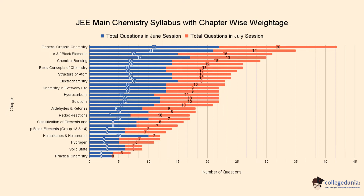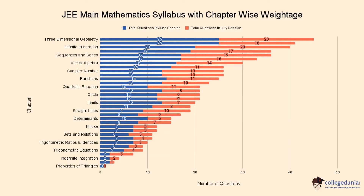Here you can see JEE Main Mathematics chapter-wise weightage for the year 2022. 3D Geometry has the highest number of questions asked in both sessions. Similarly, chapters like Definite Integration, Sequences and Series, and Vector Algebra have more weightage than other Mathematics chapters.